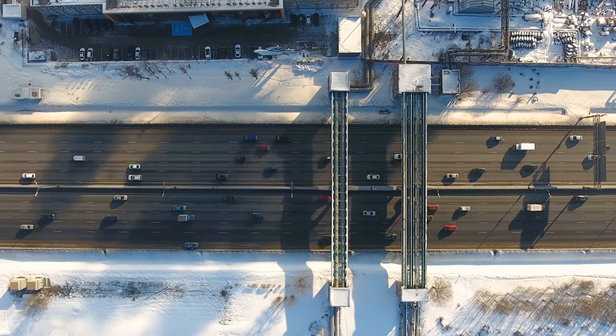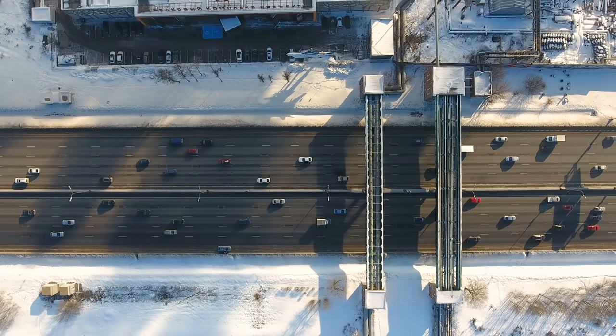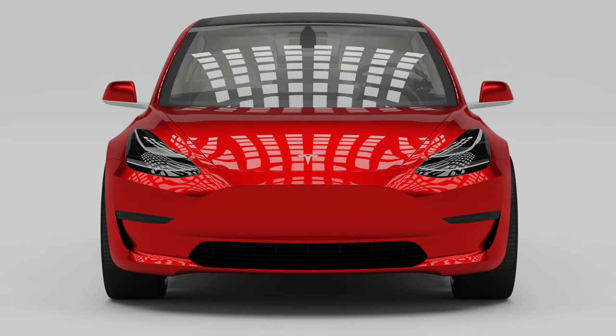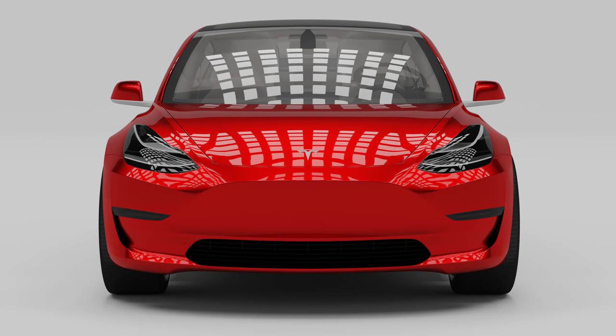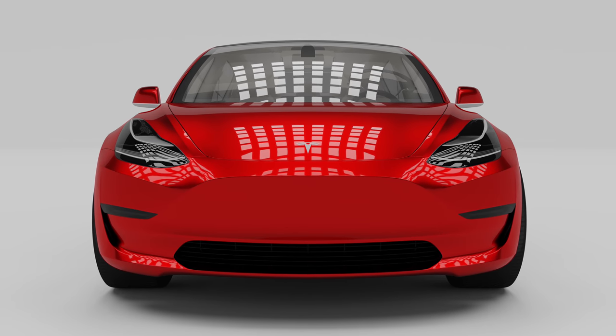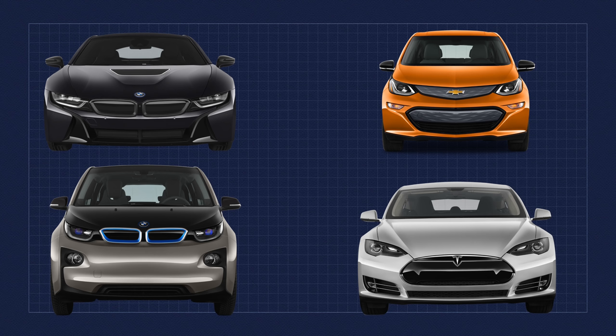In contrast, EVs are between 80 and 90% efficient and therefore require less frontal area for cooling. Many of our commenters have called the Tesla Model 3 ugly because of the lack of a big grille in the front. Big front grilles on cars are becoming an anachronism and many EVs still feature fake grilles just because people are so familiar with them.